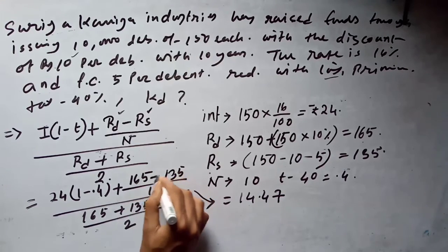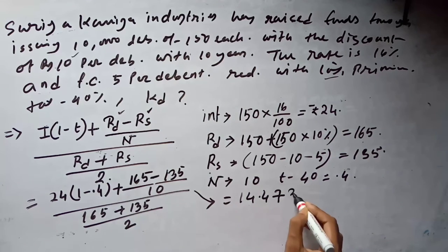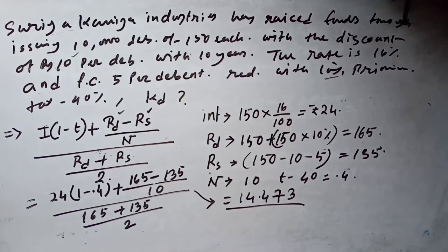24 into 0.6 is 14.4, plus the appreciation: 165 minus 135 by 10, which is 3, divided by 165 plus 135 by 2, which is 150.